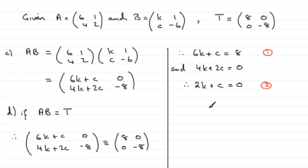So we'll have equation 1 minus equation 2. What does that give us? We've got 6K take away 2K is 4K, and we've got 8 take away 0, that's 8. So you can see that therefore K equals 2.